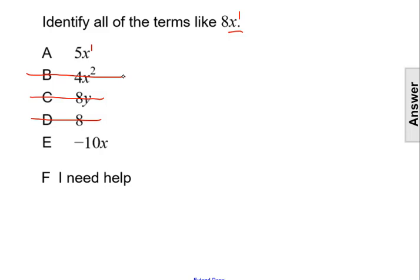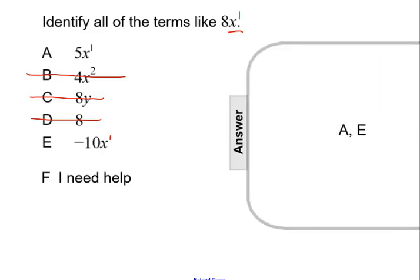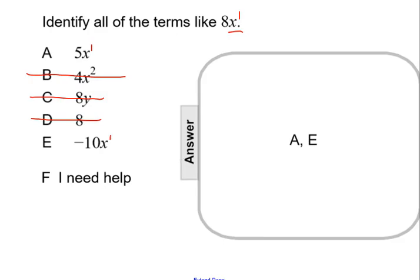And then choice E, negative 10x. Again, that's x to the first. So the only choices that would be like 8x are A and E, 5x and negative 10x.